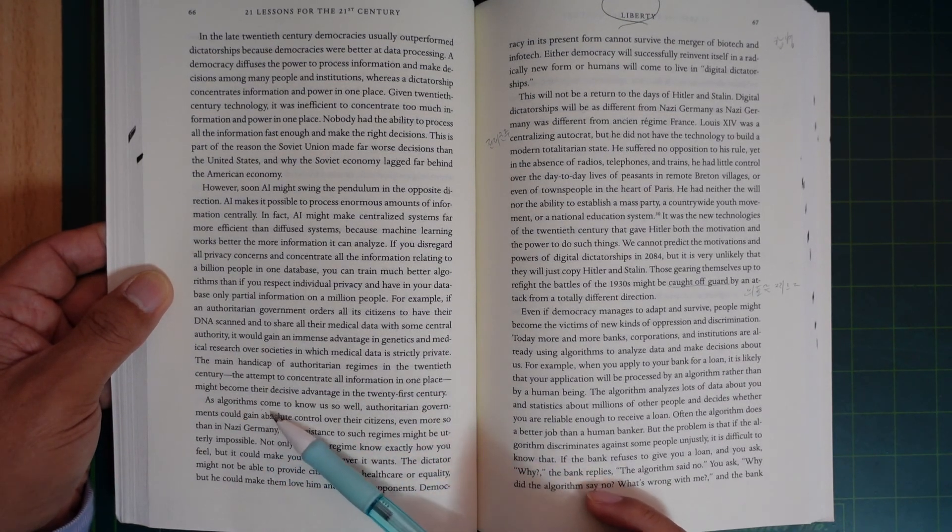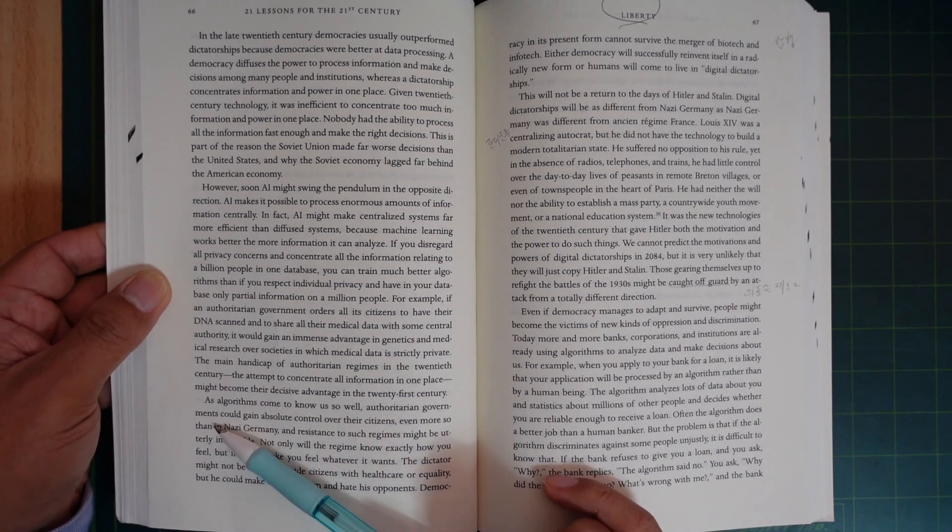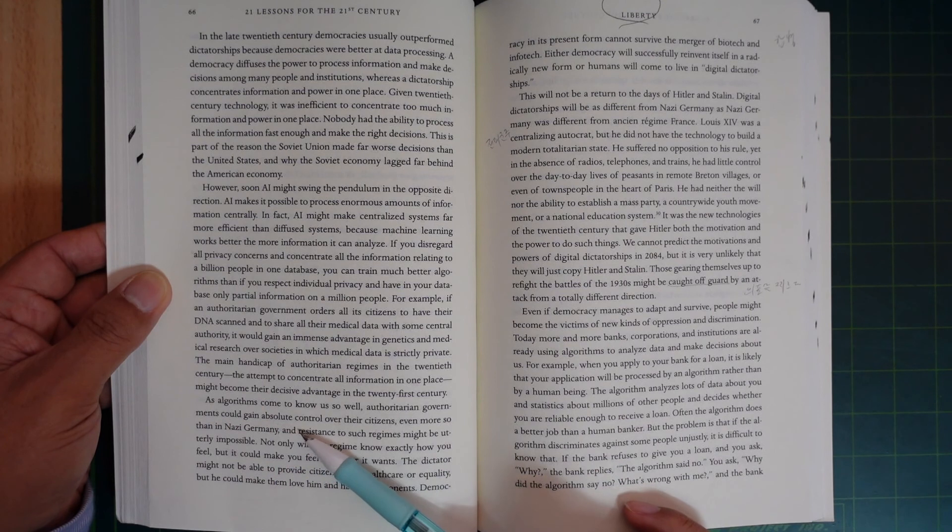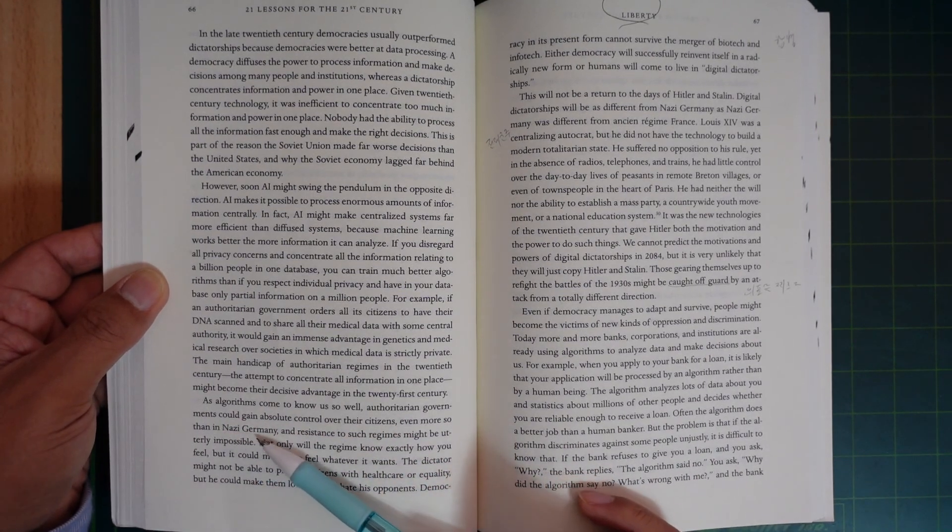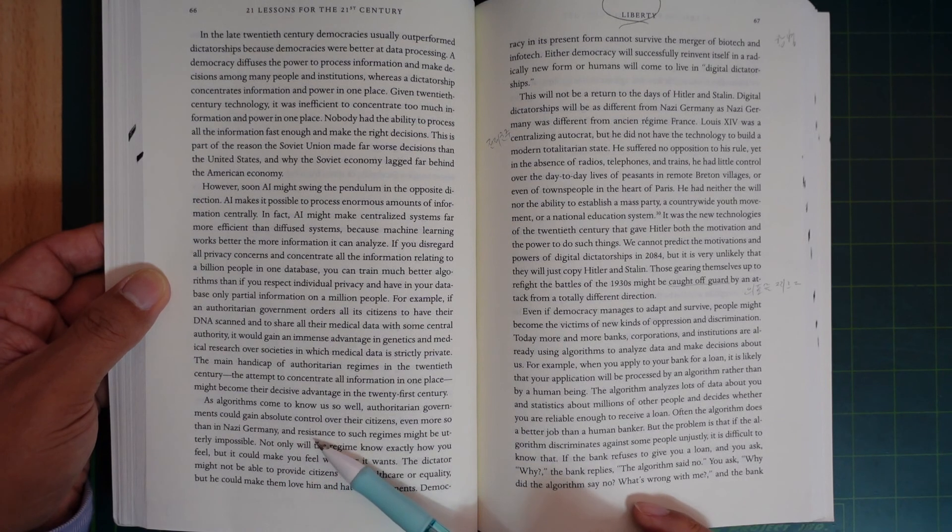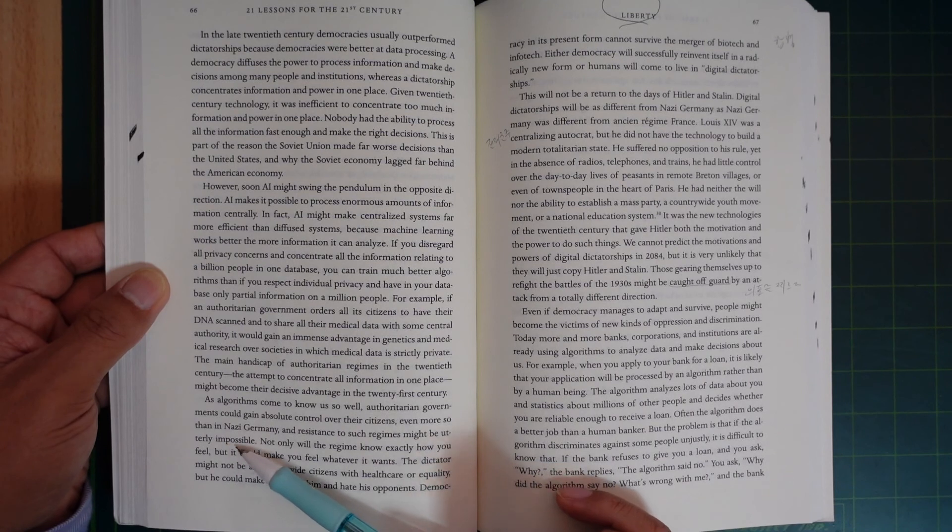As algorithms come to know us so well, authoritarian governments could gain absolute control over their citizens, even more so than in Nazi Germany, and resistance to such a regime might be utterly impossible.